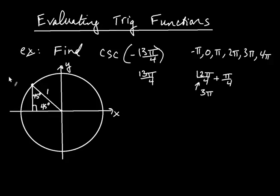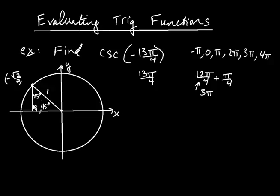The x-coordinate is not going to be positive √2 over 2 — it's going to be negative, because the x-coordinate is negative in quadrants 2 and 3. So the x-coordinate is negative √2 over 2. And the y-coordinate: the length is √2 over 2, and the coordinate itself is positive, because the y-coordinate is positive in quadrants 1 and 2. So the y-coordinate is positive √2 over 2.